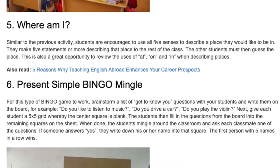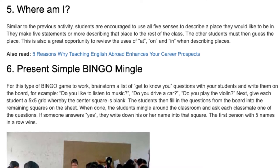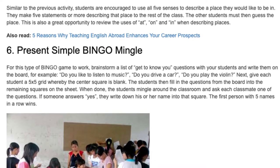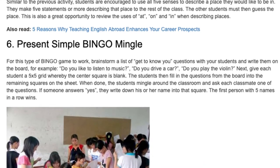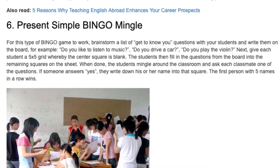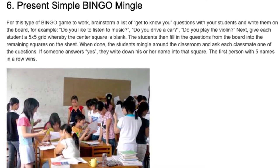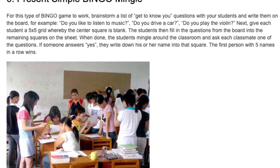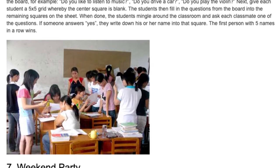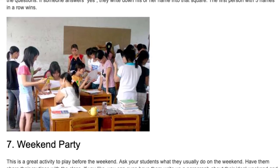6. Present Simple Bingo Mingle. Brainstorm a list of get-to-know-you questions with students and write them on the board, e.g., 'Do you like to listen to music?' 'Do you drive a car?' 'Do you play the violin?' Give each student a 5x5 grid with the center square blank; students fill in questions from the board into the remaining squares. Students then mingle and ask each classmate one question. If someone answers yes, they write down that person's name in the square. The first person with five names in a row wins.